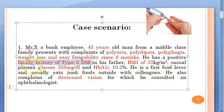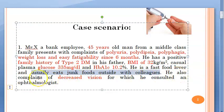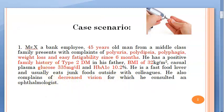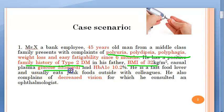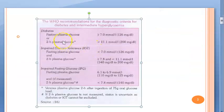His BMI is 32, which is high. His casual plasma glucose — that is, random plasma glucose — is 335 mg/dL, and his HbA1c is 10.2%, both elevated. He is a fast food lover and complains of decreased vision, for which he has consulted an ophthalmologist. So the clues are clear: classic symptoms of diabetes, family history, obesity, high blood sugar, high glycosylated hemoglobin, and likely diabetic retinopathy.